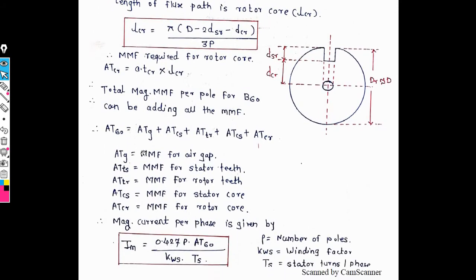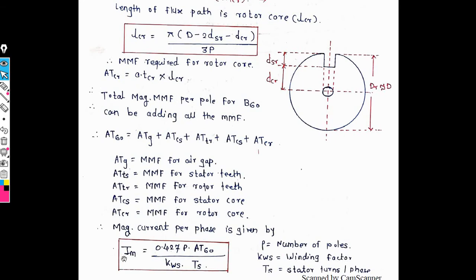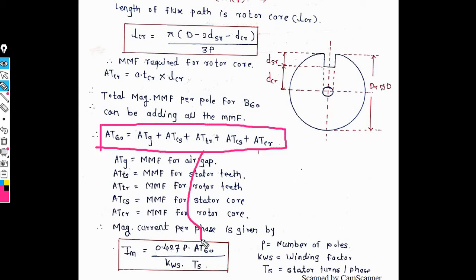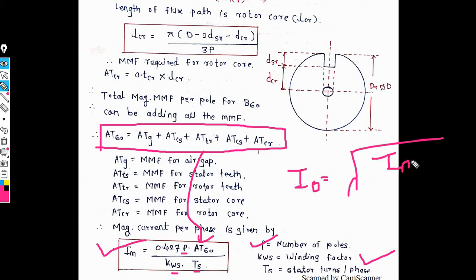The formula for magnetizing current per phase in a three-phase induction motor is: Im = 0.427 × P × AT₆₀ / (Kw × Ts), where P means number of poles, AT₆₀ means ampere turns at 60 degrees, Kw means winding factor, and Ts means stator turns per phase. This is the magnetizing current for three-phase induction motor. The second parameter remaining is the core loss component. No-load current I₀ equals the square root of Im² plus IL².